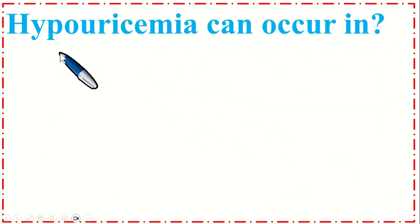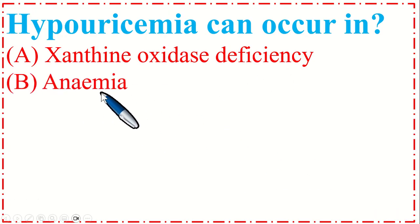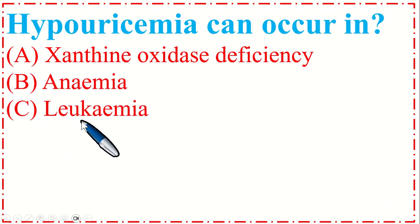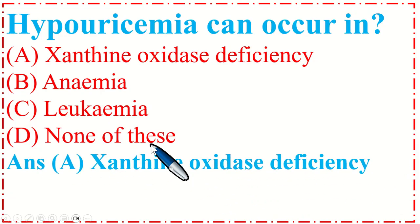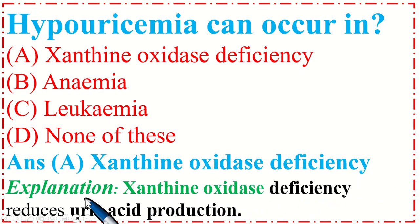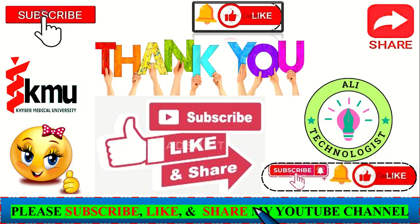This is a very important MCQ. Hypouricemia can occur in: Option A. Xanthine oxidase deficiency, B. Anemia, C. Leukemia, and D. None of these. The correct option is A, xanthine oxidase deficiency. Xanthine oxidase deficiency reduces uric acid production. Thank you for watching my videos.